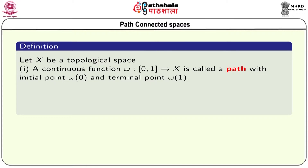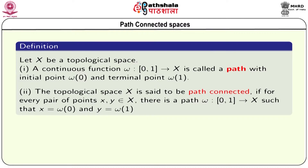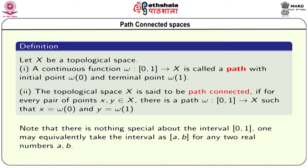Let X be a topological space. A continuous function w from the closed interval [0,1] to X is called a path with initial point w(0) and terminal point w(1). The topological space X is said to be path connected if for every pair of points x, y in X, there is a path w such that x equals the initial point w(0) and y equals the terminal point w(1). Note that there is nothing special about [0,1]; one may equivalently take the closed interval [a,b] for any two real numbers a and b.